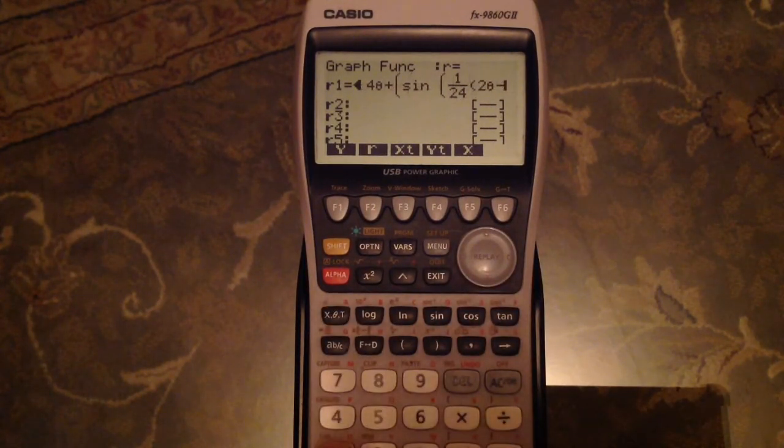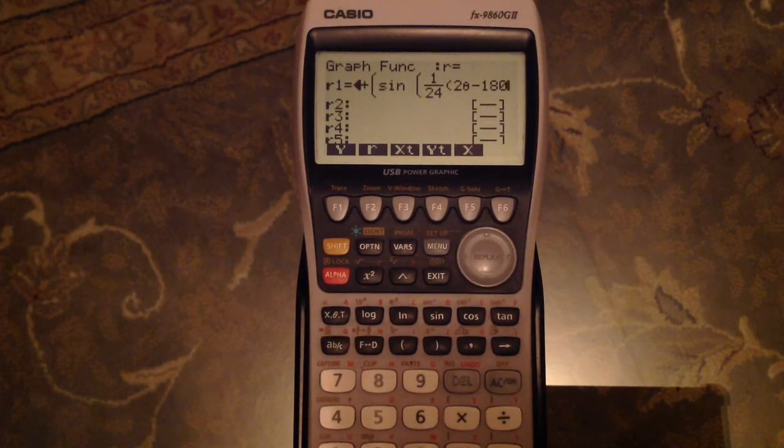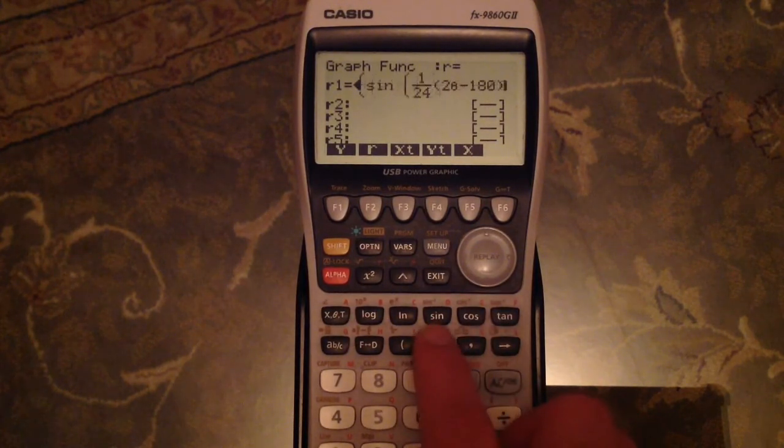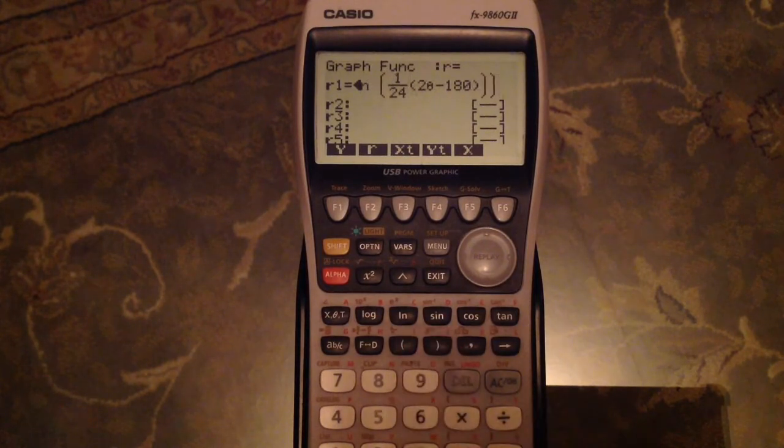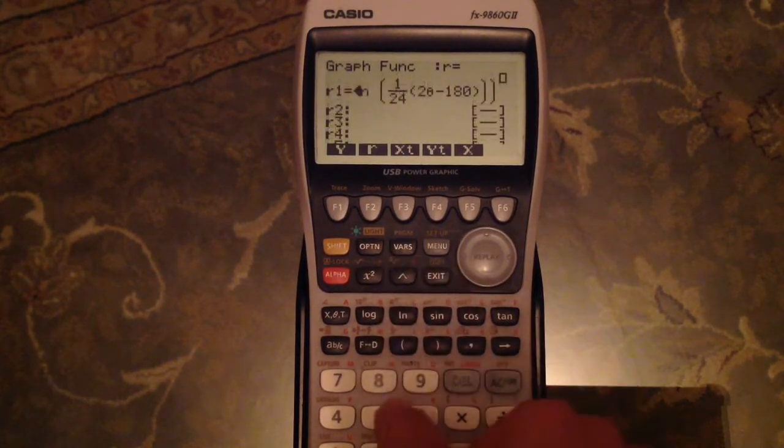2 theta minus 180. Because I'm working in degrees. Pi if you're in radians. Close that bracket. Close that bracket. Close the larger bracket. And all of that to the power of 5.